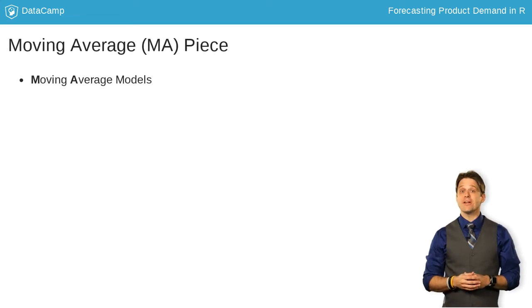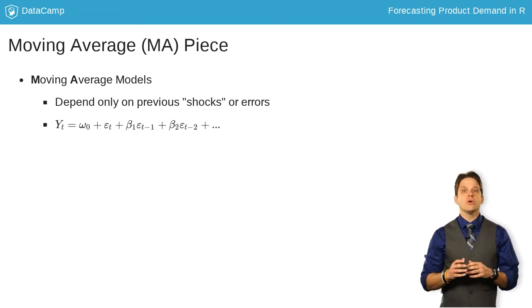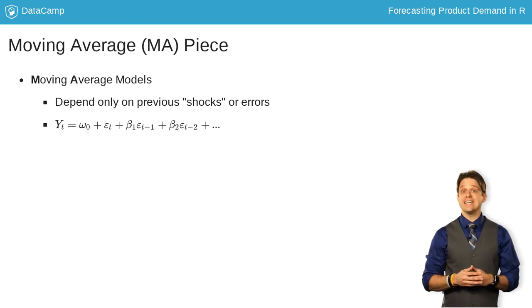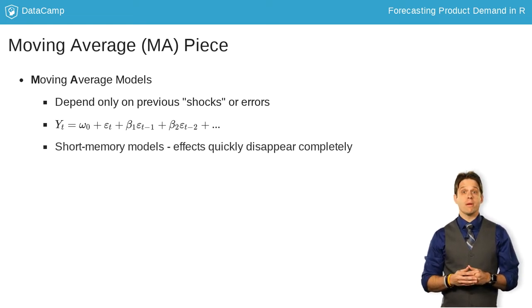Moving average models deal with previous hidden shocks or errors in your model. This is harder to conceptualize. Essentially, how abnormal your previous value was compared to what was predicted last month has some residual effect on this month's sales. They are called short memory models because these effects quickly disappear completely.